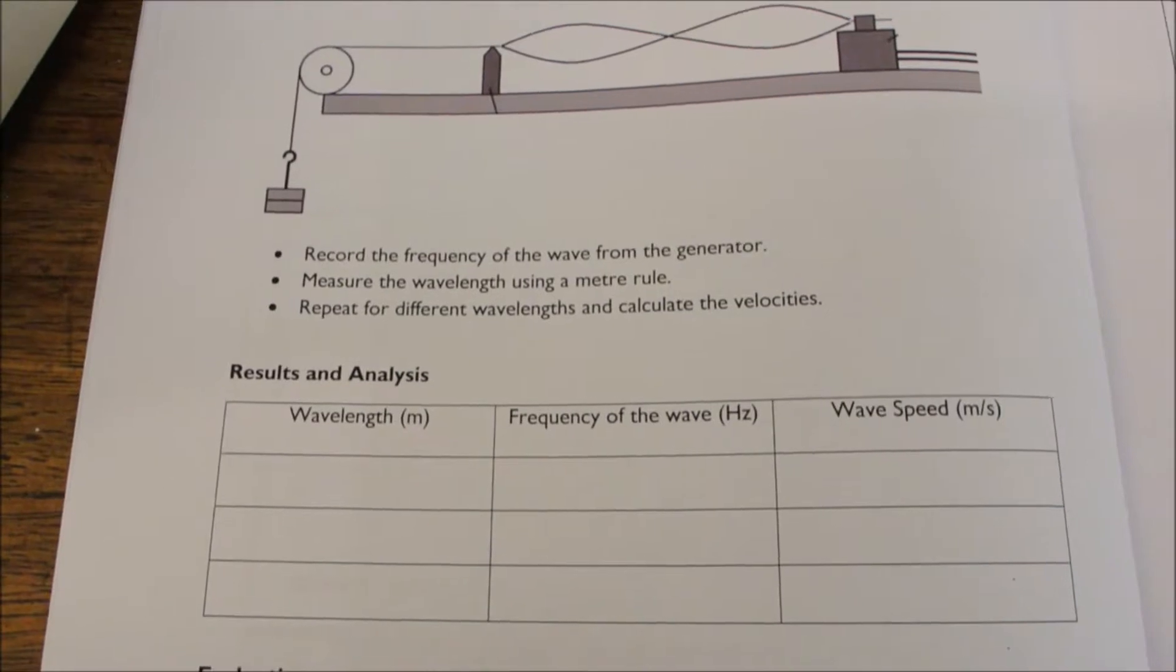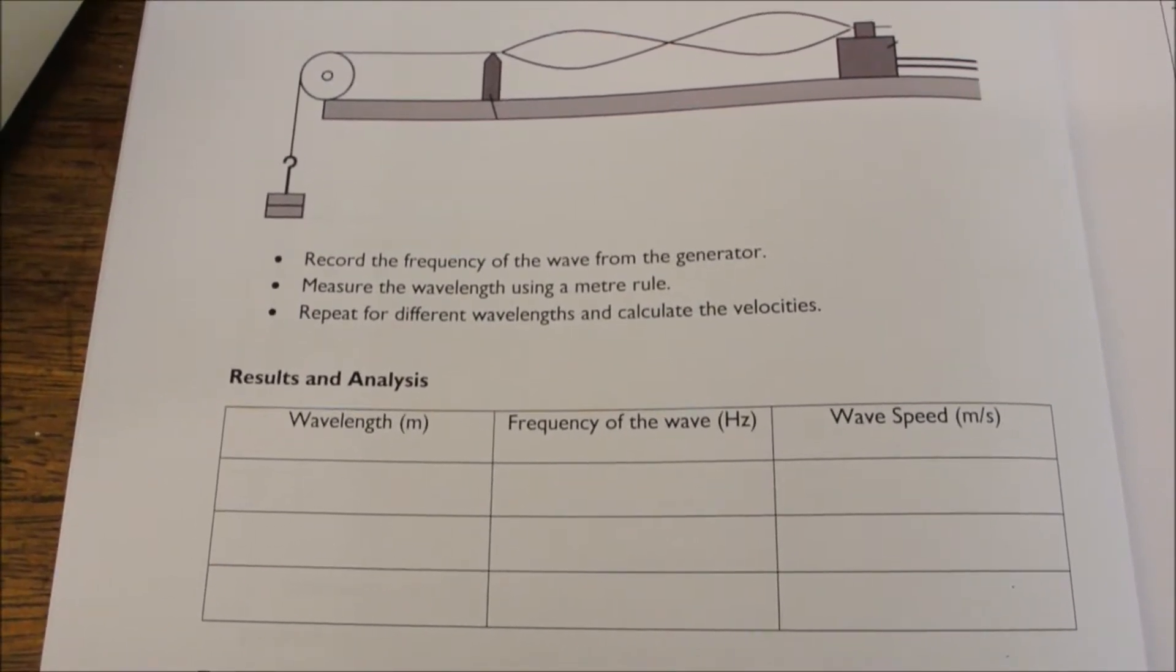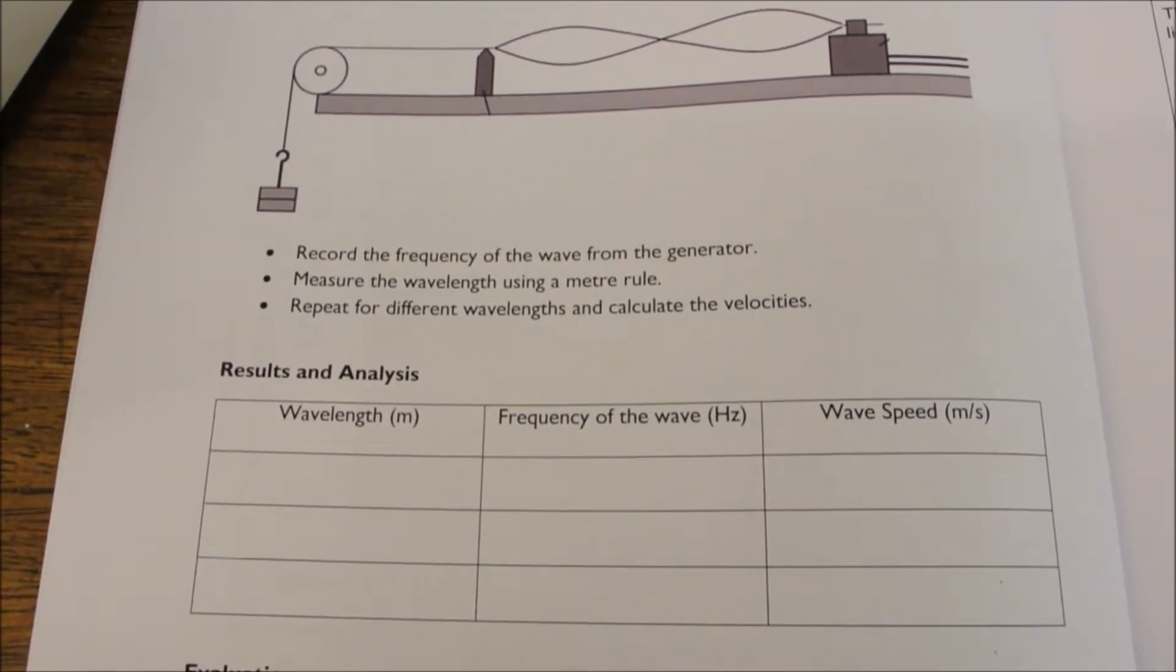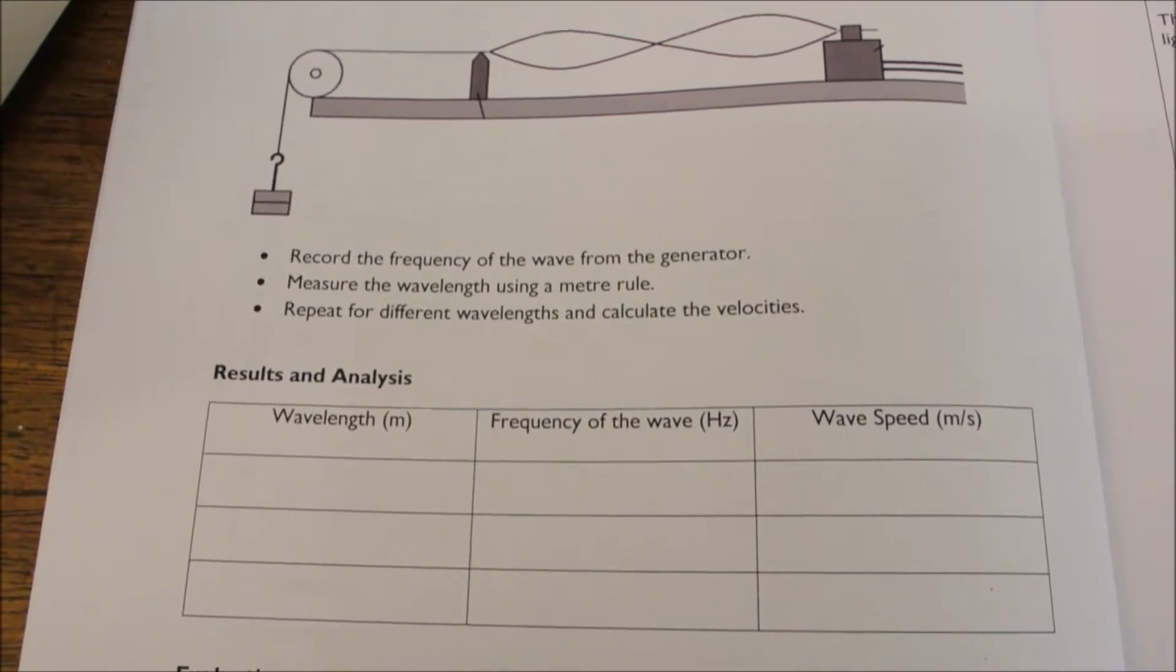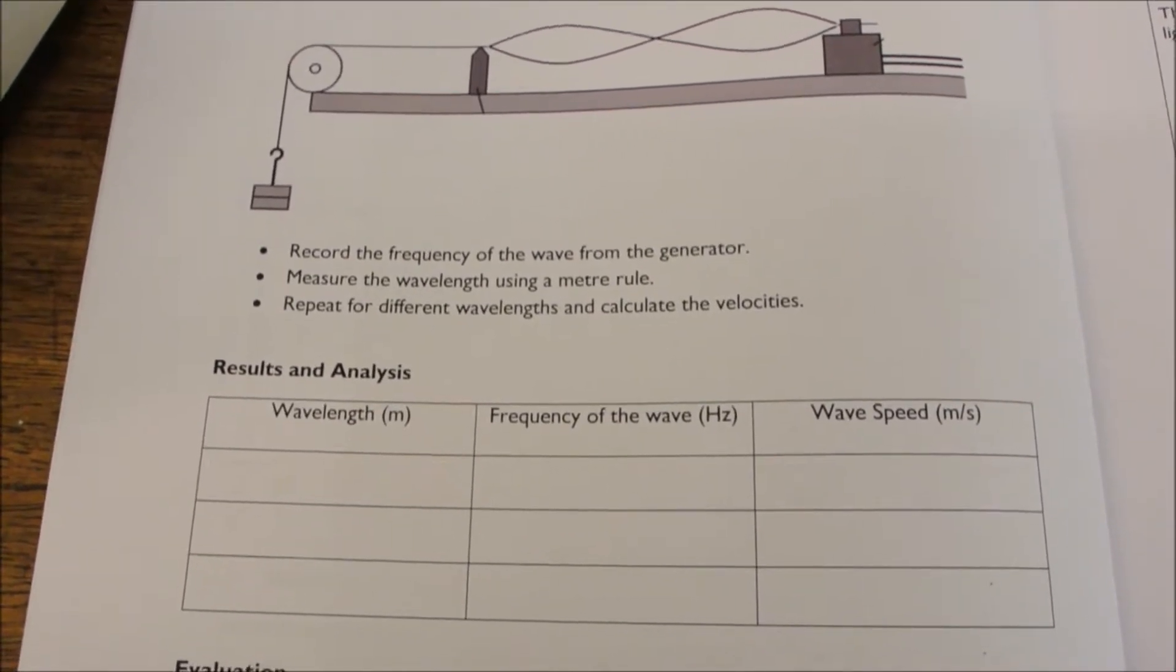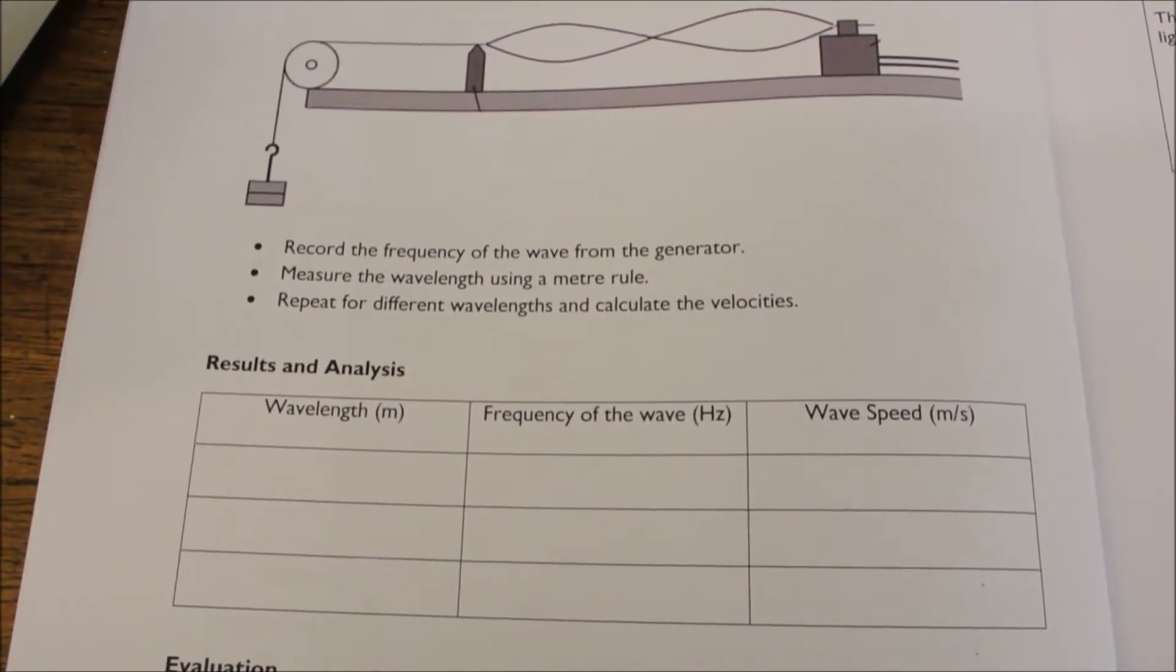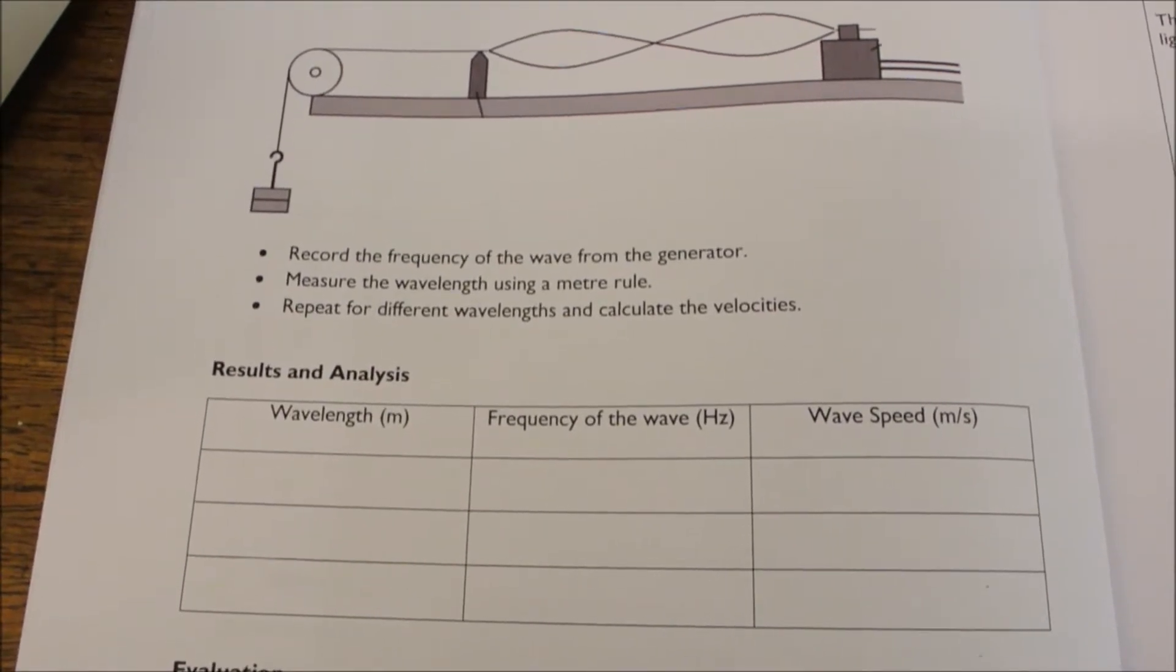So the purpose of this experiment is for us to set up this standing wave on the solid string, measure the wavelength, measure the frequency from the signal generator, and then calculate the wave speed.